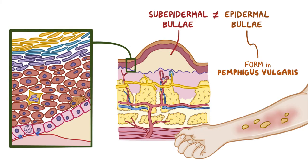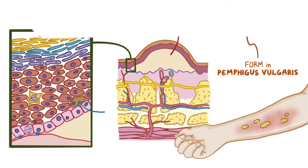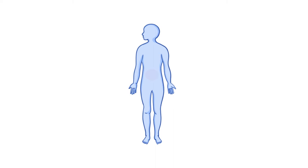In bullous pemphigoid, the inflammation also affects the melanocytes, which produce more melanin that gets stuck within the cells of the dermis. Bullous pemphigoid is most commonly located on the lower abdomen, flexor side of the forearms, and anterior or inner thighs, but can also involve other areas. Unlike Pemphigus vulgaris, it doesn't typically involve the oral mucosa.